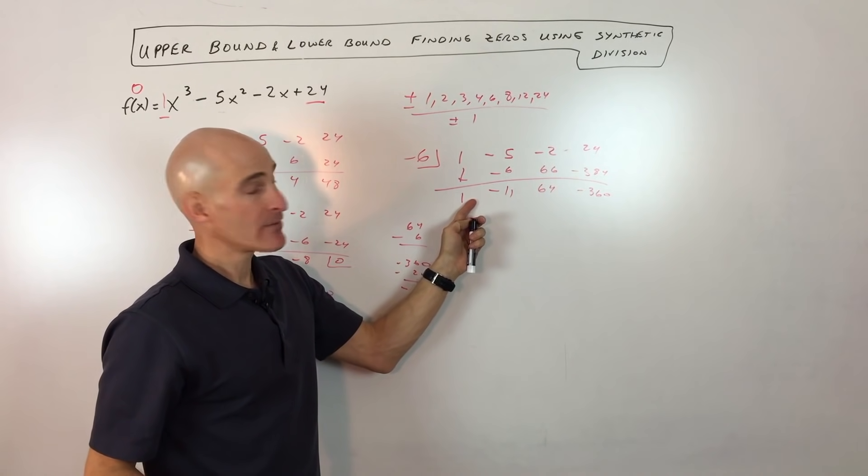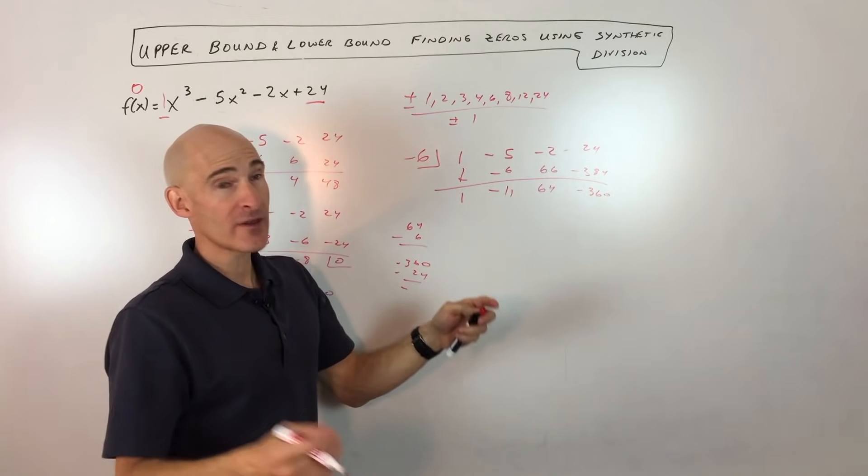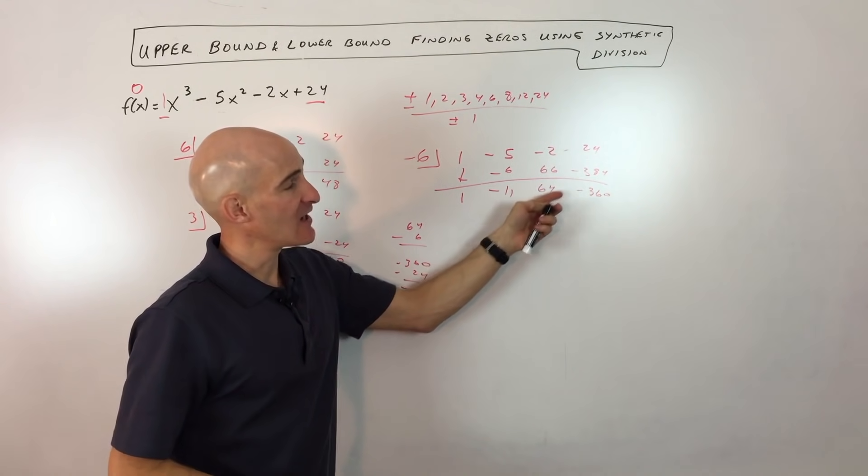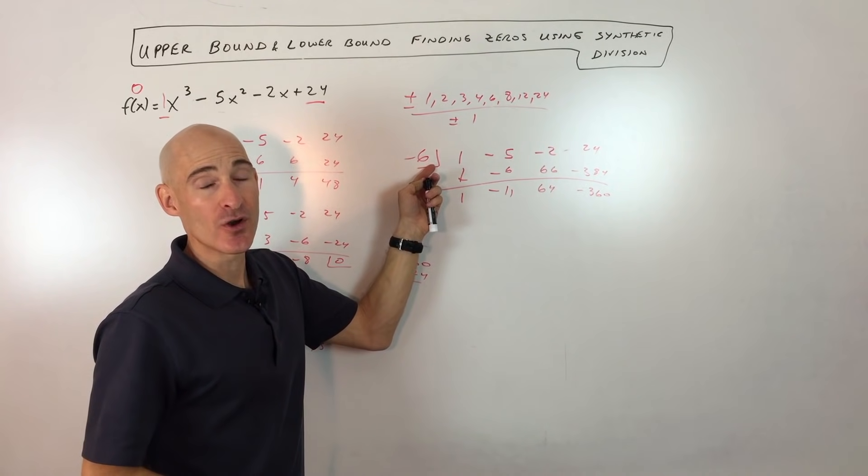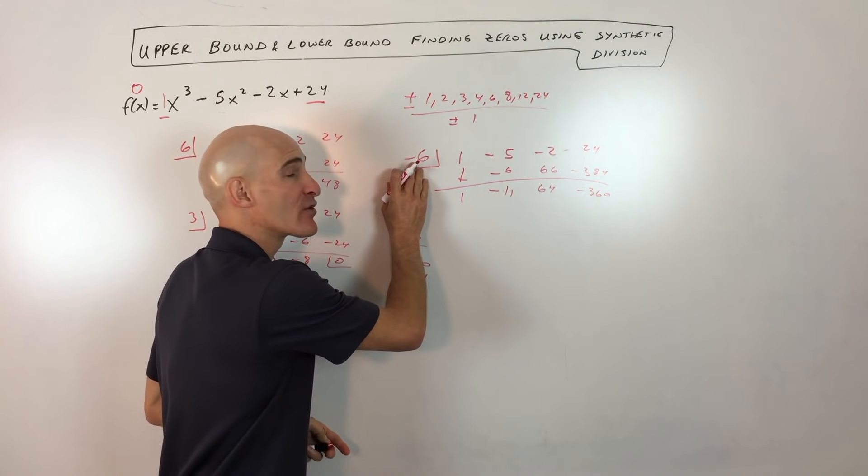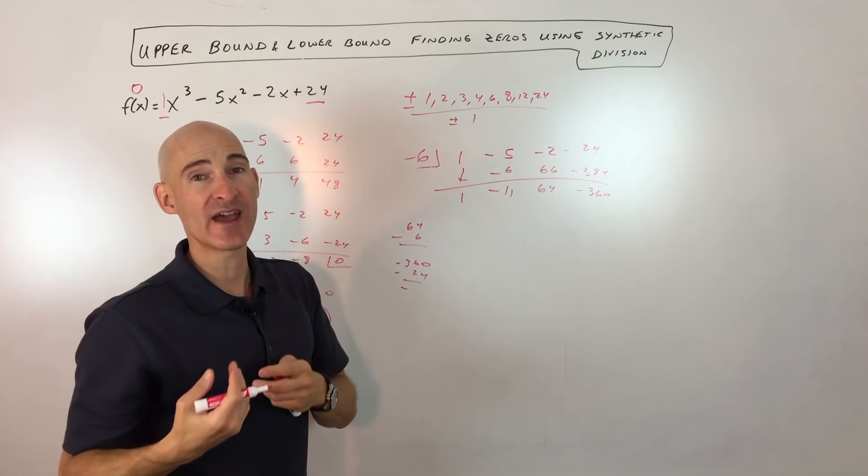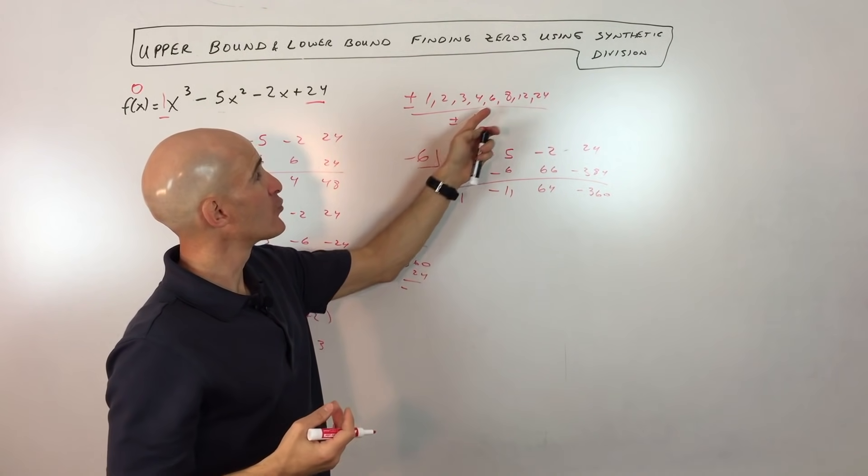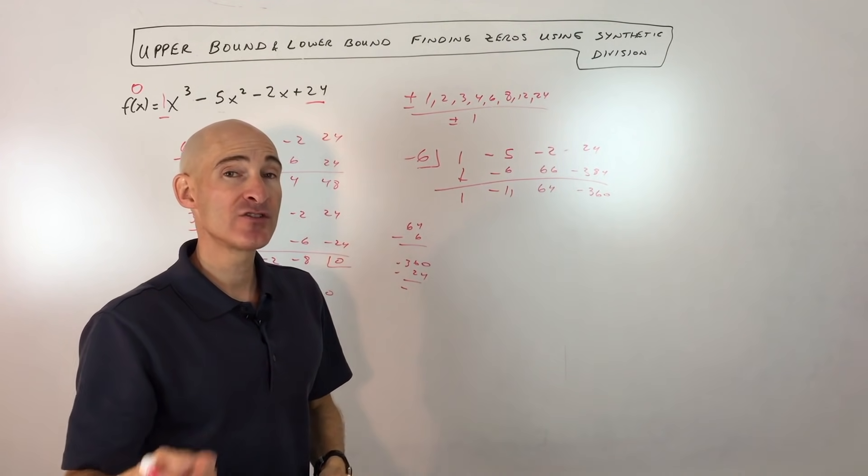But what's interesting is see how these numbers, they alternate positive, negative, positive, negative, or if they were to alternate negative, positive, negative, positive, if they alternate like that, when you're checking for a negative zero, that tells you that this number here is a lower bound, which means that there's not any zeros that are lower than that number. So you can automatically rule out negative eight, negative 12, and negative 24, which cuts down your work considerably.